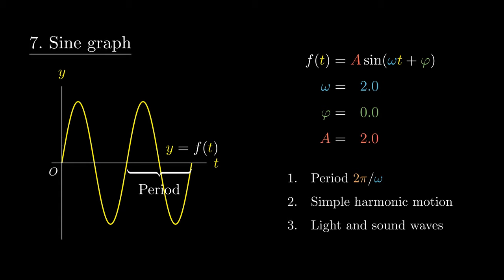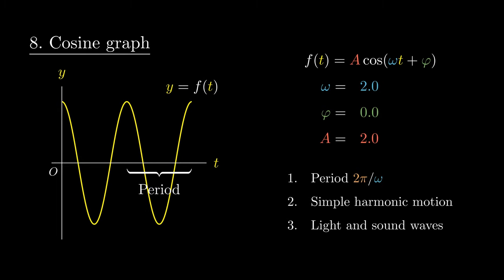Closely connected to the sine graph is the cosine graph, which is similar to a sine graph, with the exception that it starts on the top, at least when the phase is 0. This similarity is not a coincidence, and can be established using trigonometric identities. For a proof of these identities, check out the video in the video card.